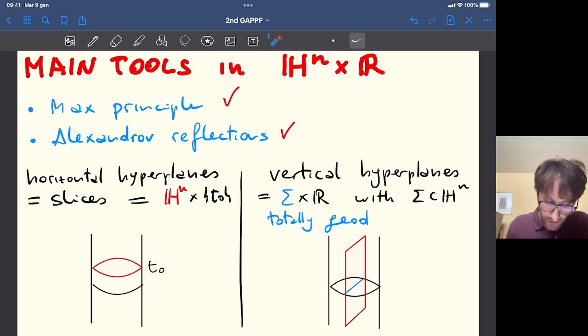The second type of hyperplane are the vertical ones, and they are just the product between a totally geodesic hypersurface in the slice across R. They are a lot, but very few if we compare with the hyperplanes of the Euclidean space. But it's enough for our purpose.